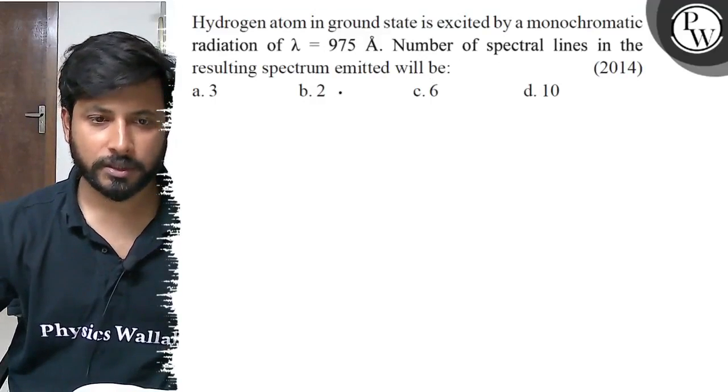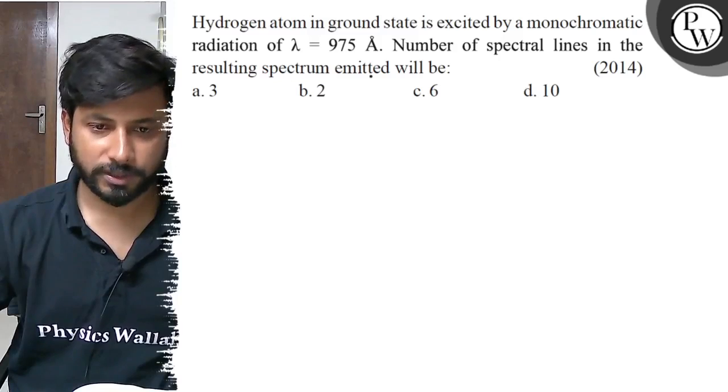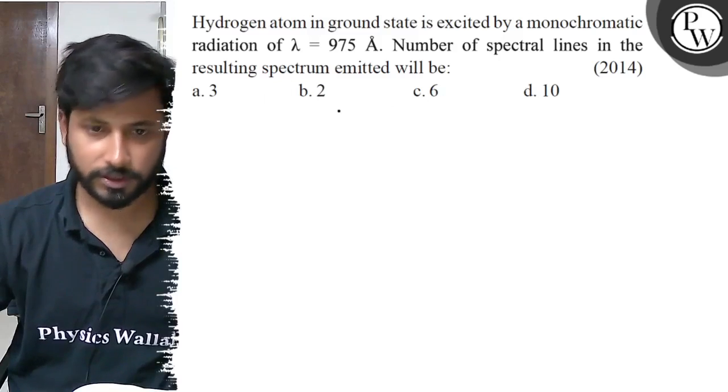Number of spectrum lines in the resulting spectrum emitted will be: option A 3, option B 2, option C 6, option D 10.